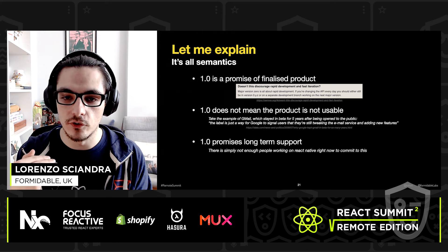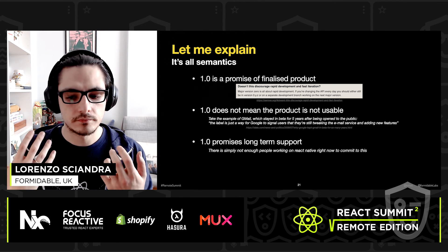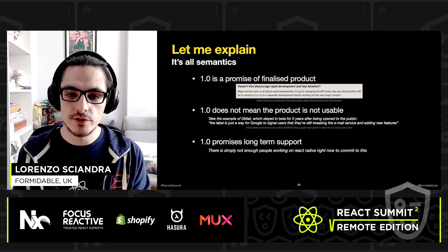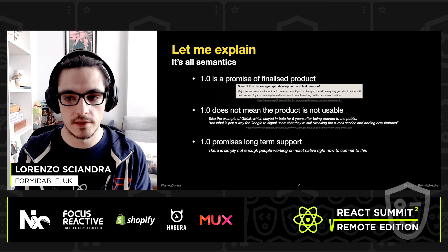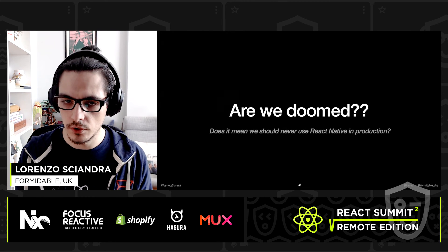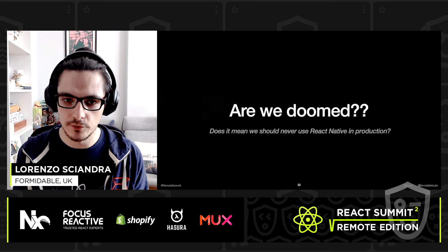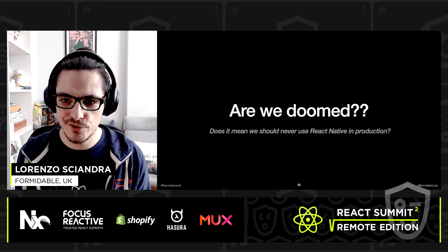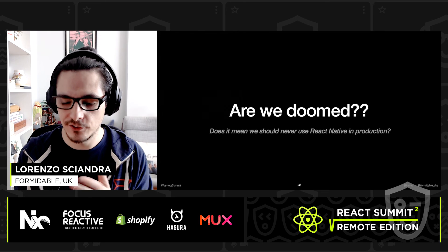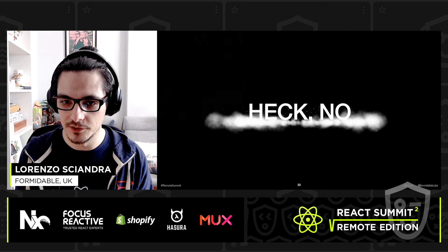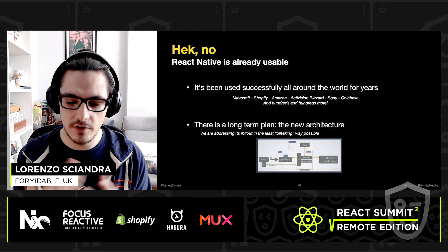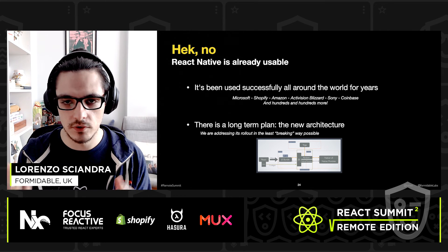Gmail had the beta label for five years, because it was there to say: hey folks, we're still working on it, still tweaking and adding new things — which is sort of what's happening with React Native. So should we never use React Native in production since there's no 1.0? The answer is heck no — React Native is already vastly usable.